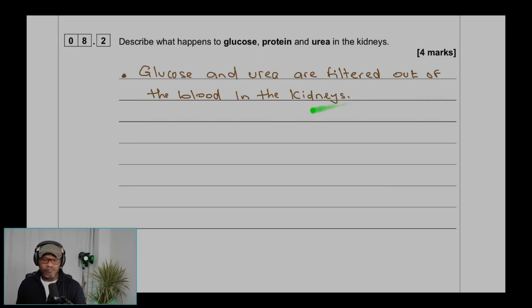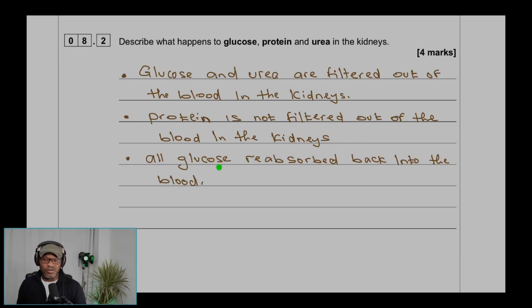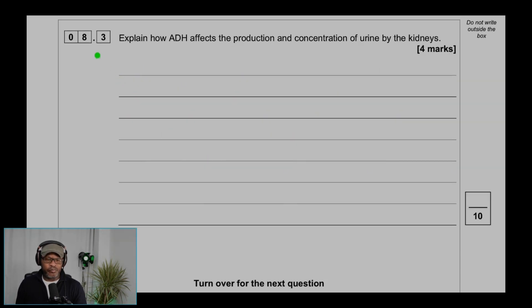Protein is not filtered out of the blood in the kidneys. All glucose is reabsorbed back into the blood. Urea is mostly not reabsorbed; it passes out in urine.